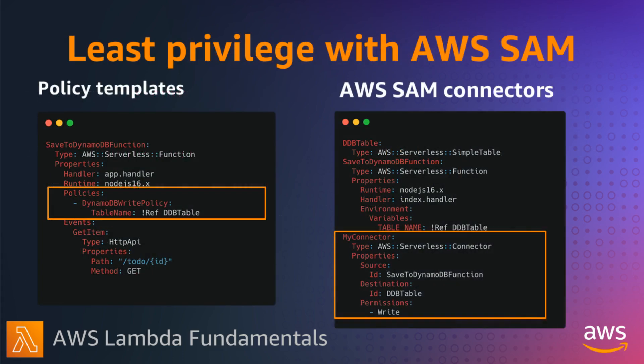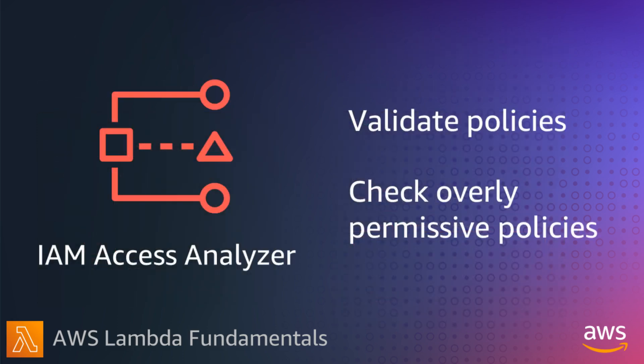You can use a number of authoring tools to simplify managing your policies. For example, the AWS Serverless Application Model, AWS SAM, scopes the permissions of your Lambda functions to only the resources used by your application. AWS SAM policy templates let you choose from a list of pre-created policy templates to simplify permissions. AWS SAM connectors are another way to manage policies between source and destination resources. IAM Access Analyzer can also help you identify what permissions you need for the IAM execution role — it reviews your AWS CloudTrail logs over a date range that you specify and then generates a policy template with only the permissions that the function used during that time.